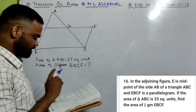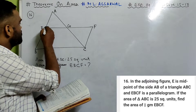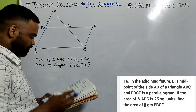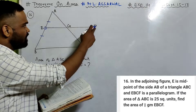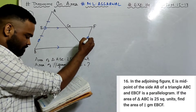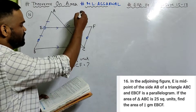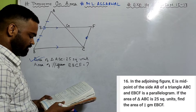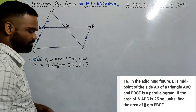Now look at problem 16. In the adjoining figure, E is the midpoint of side AB of triangle ABC, meaning AE equals BE, and EBCF is a parallelogram. If the area of triangle ABC is 25 square units, find the area of parallelogram EBCF.